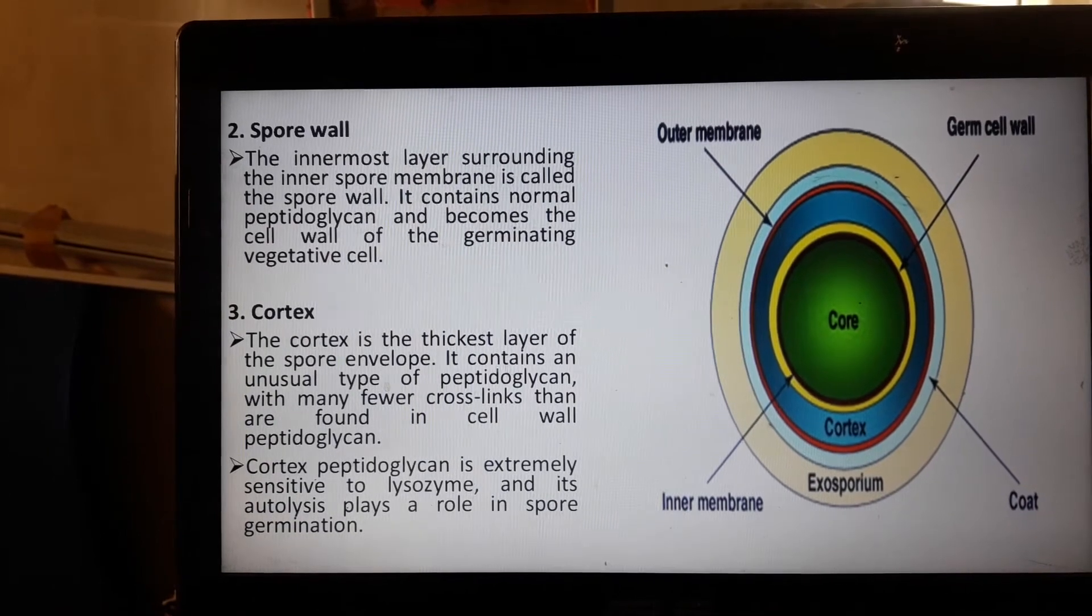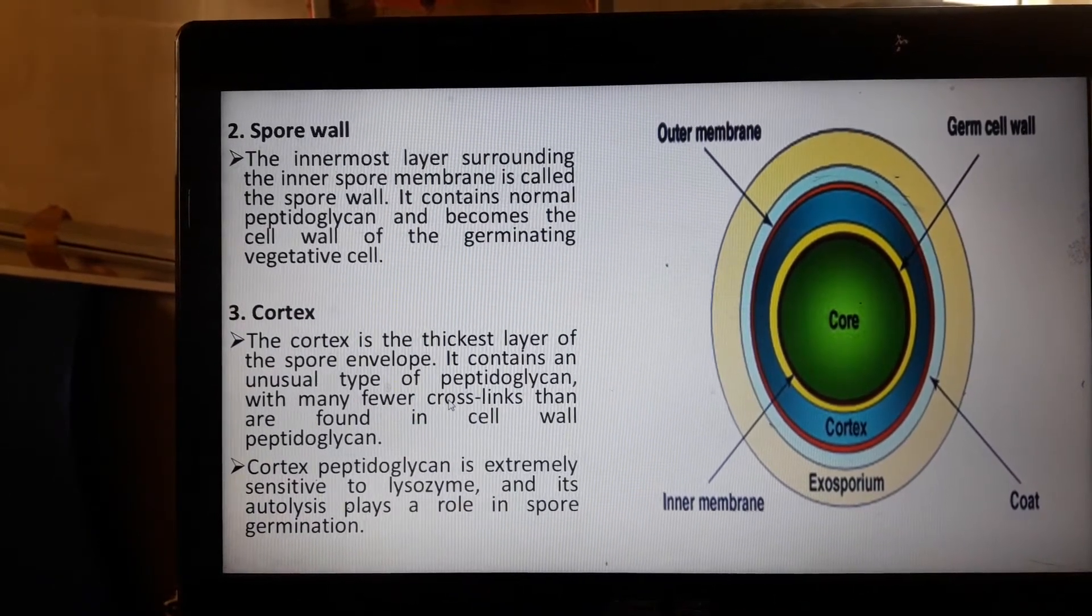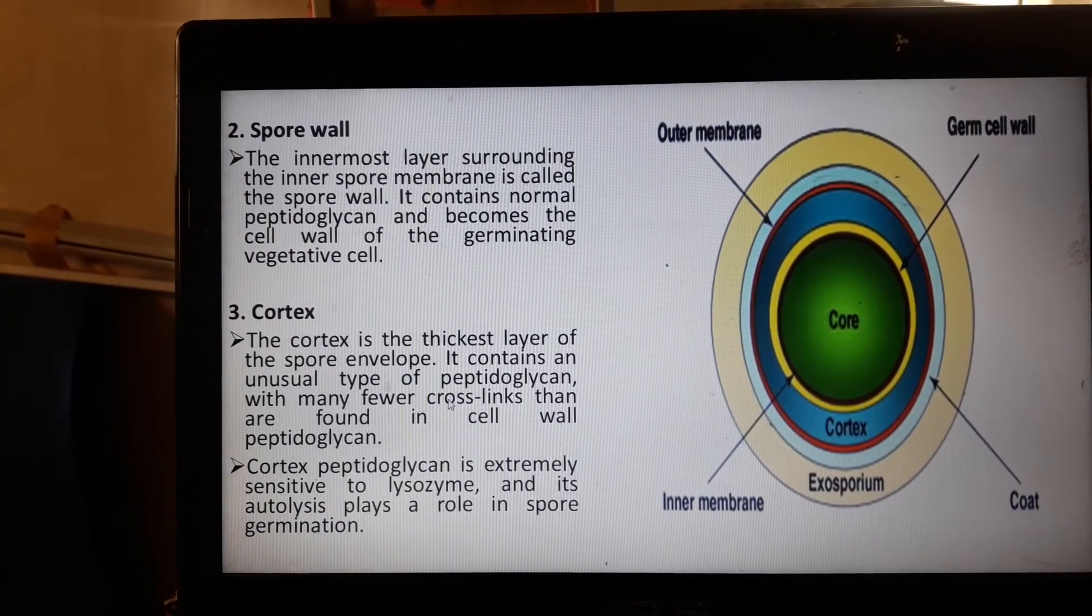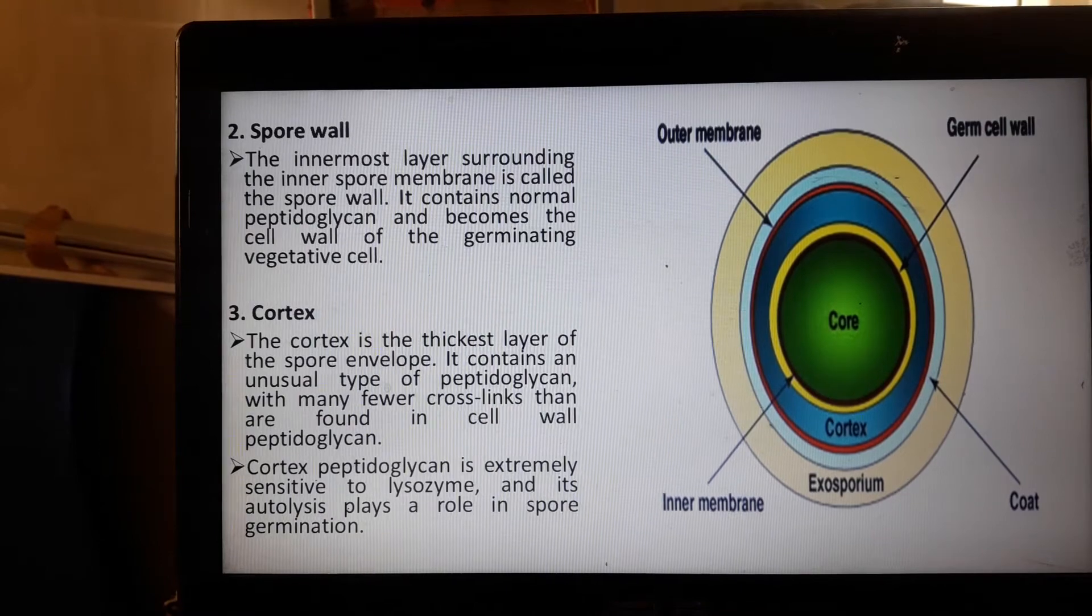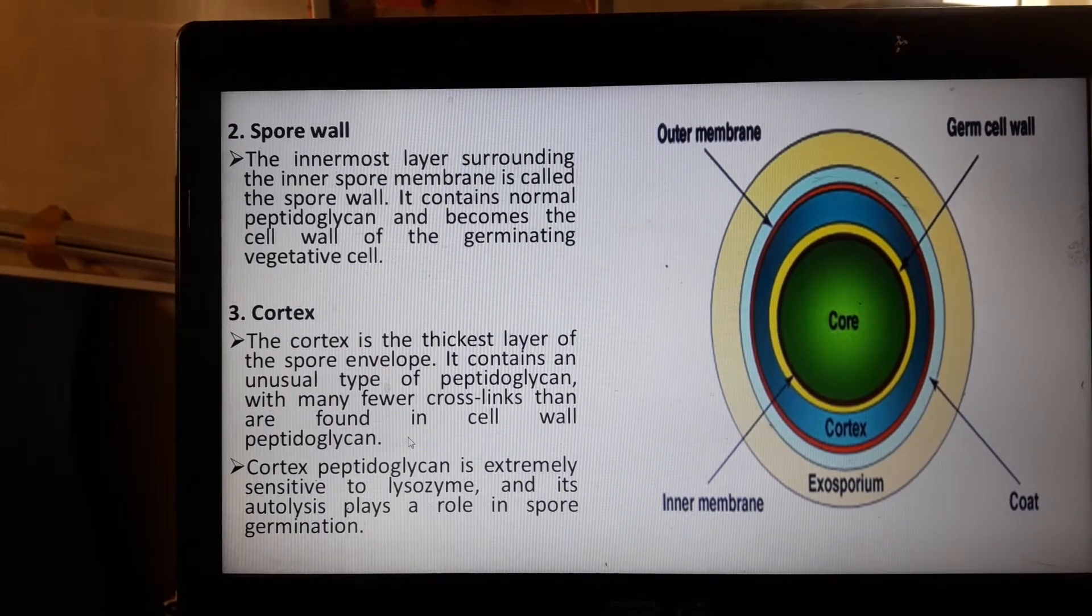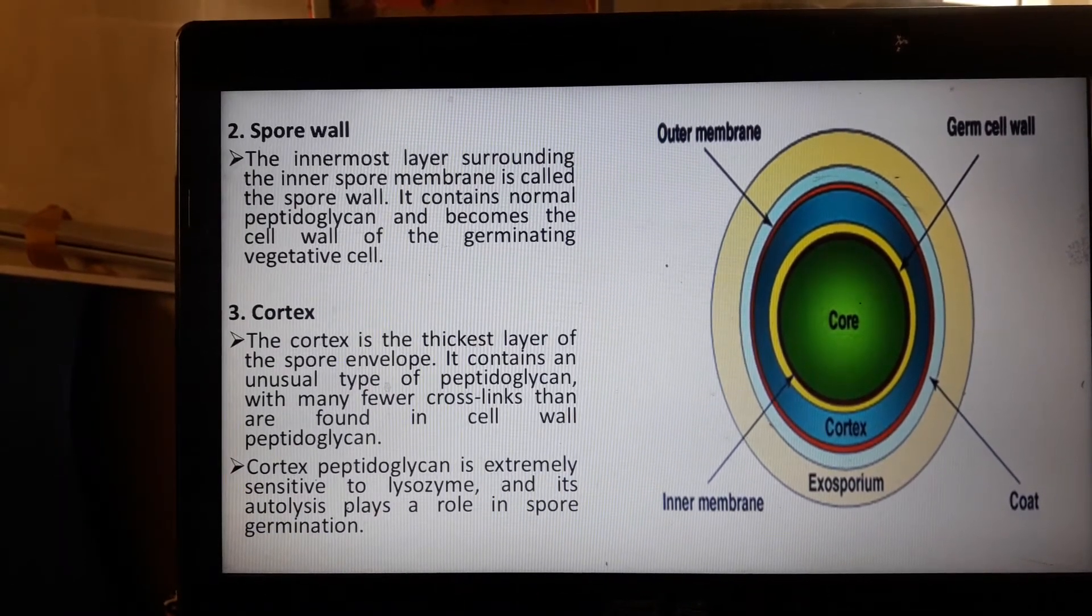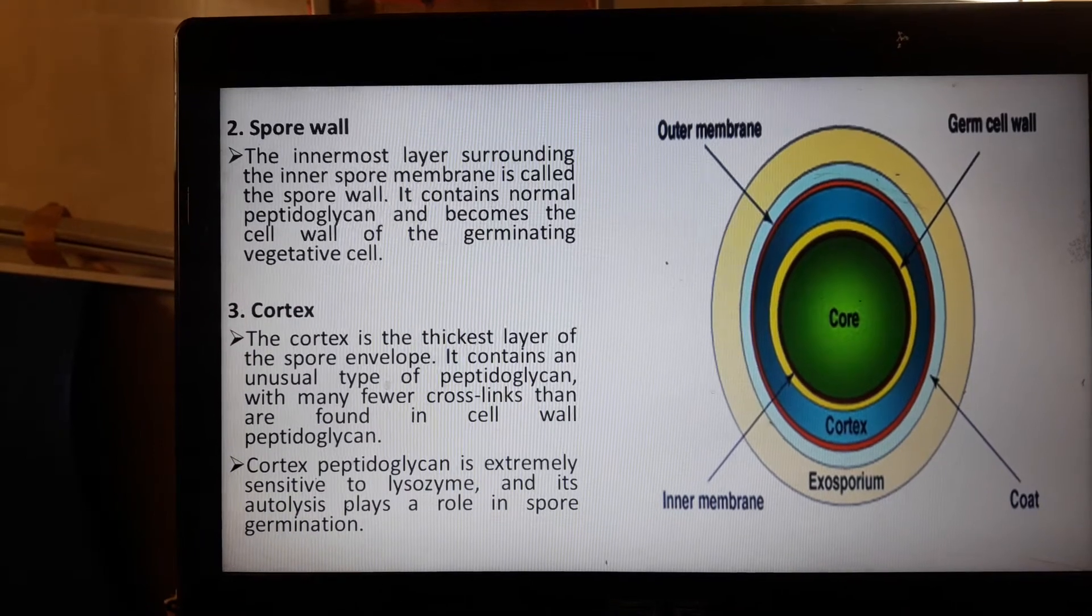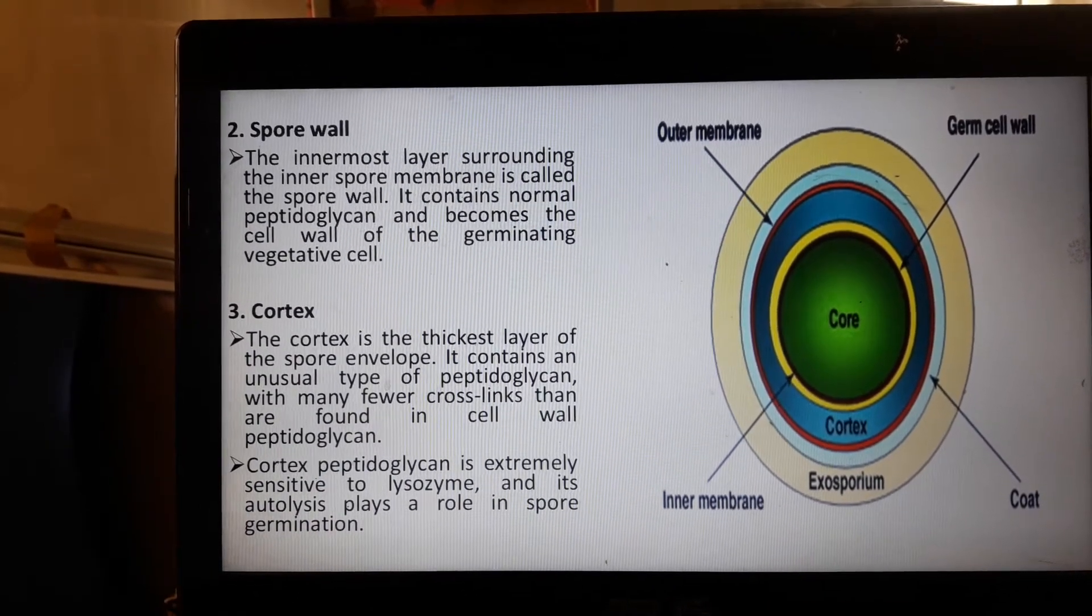It contains an unusual type of peptidoglycan layer which protects the entire cells, with many fewer cross-links than are found in the cell wall of the peptidoglycan layer. Peptidoglycan layers are protein plus polysaccharides which protect the entire cells from different environmental exposures.